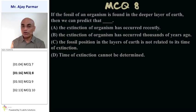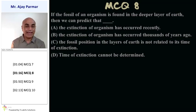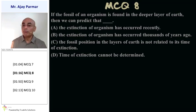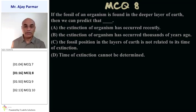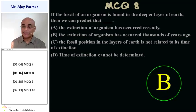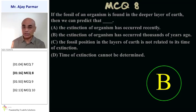If the fossil of an organism is found in a deeper layer of the earth, then we can predict that the extinction of that organism occurred many years ago. Options C and D are irrelevant. So obviously option B — the extinction must have occurred thousands of years ago. That is why it is found in the deeper layers of the earth.